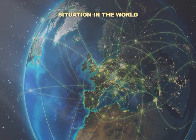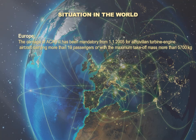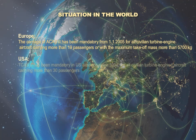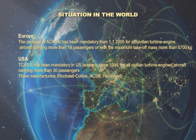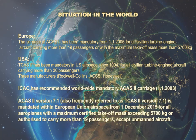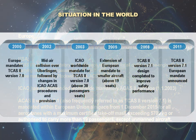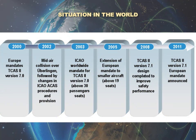Situation in the world. In Europe, the carriage of ACAS-II has been mandatory from 1 January 2005 for all civilian turbine-engined aircraft carrying more than 19 passengers or with a maximum take-off mass more than 5,700 kg. In the USA, Traffic Alert and Collision Avoidance System TCAS-II has been mandatory in U.S. airspace since 1994, for all civilian turbine-engined aircraft carrying more than 30 passengers. ICAO has recommended worldwide mandatory ACAS carriage. The ACAS-II version 7.1, also frequently referred to as TCAS-II version 7.1, is mandated within European Union airspace from 1 December 2015 for all aeroplanes with a maximum certified take-off mass exceeding 5,700 kg or authorized to carry more than 19 passengers, except unmanned aircraft.